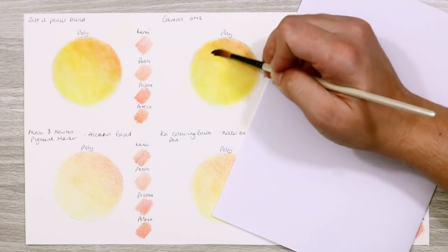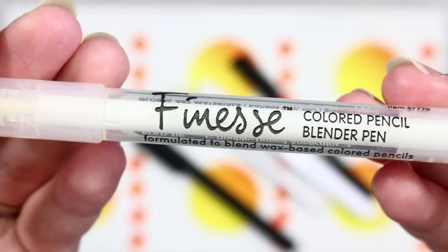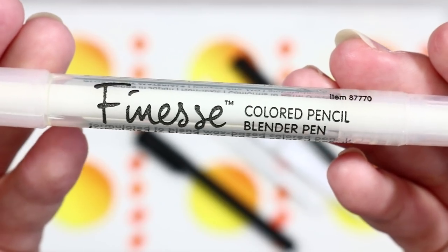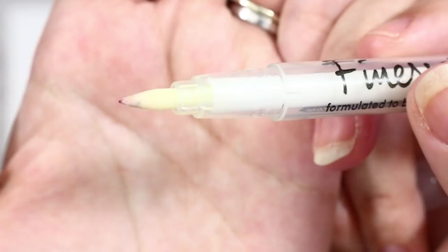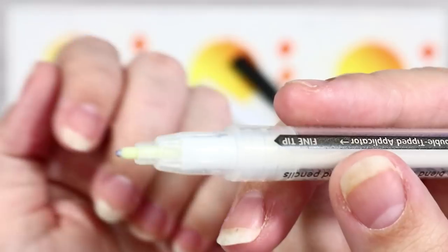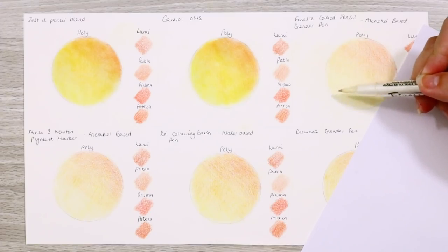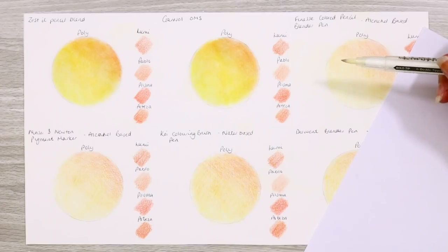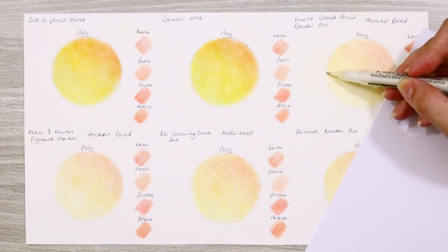Now we're getting into those blender pens. First up we have the Finesse blender pen. This one is alcohol based and it has two tips: a very nice brush tip which is my favorite and great for large areas, and it also has a small bullet tip which is very hard and great for getting into tiny detail areas.